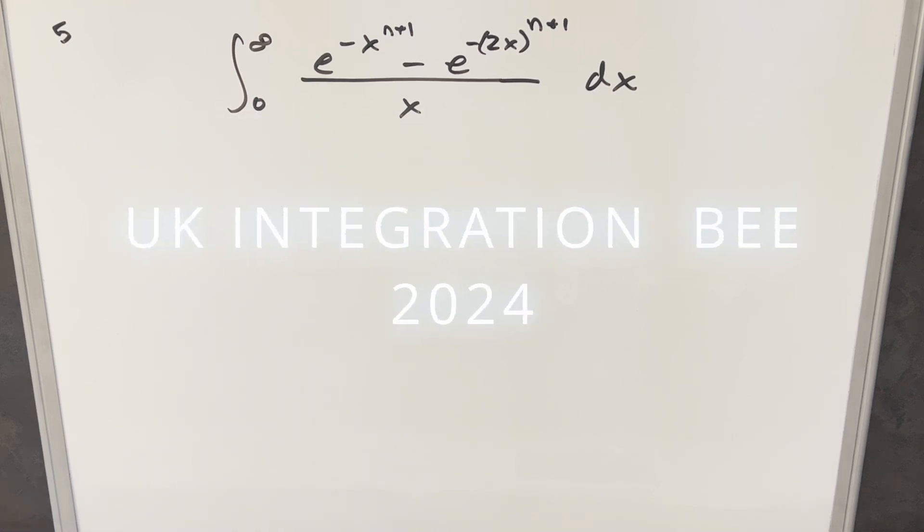Okay, we have another integral. We've got something here from the UK integration B 2024 number five. We have the integral from zero to infinity, e minus x to the n plus one minus e to the minus two x to the n plus one, all over x dx.